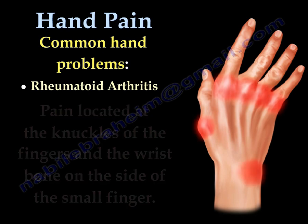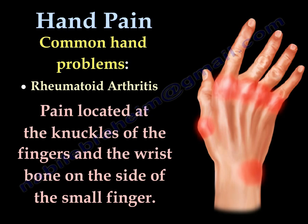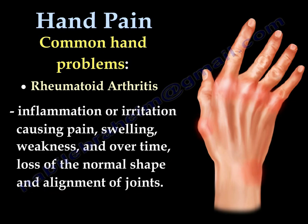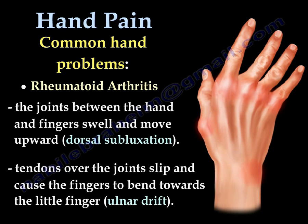Rheumatoid arthritis causes pain located at the knuckles of the fingers and at the wrist on the side of the small finger. It involves inflammation and irritation causing pain, swelling, and weakness. Over time, the patient will lose joint cartilage, there will be attrition and rupture of the tendons, and the joints will dorsally sublux with ulnar drift — the fingers deviate towards the ulnar side.